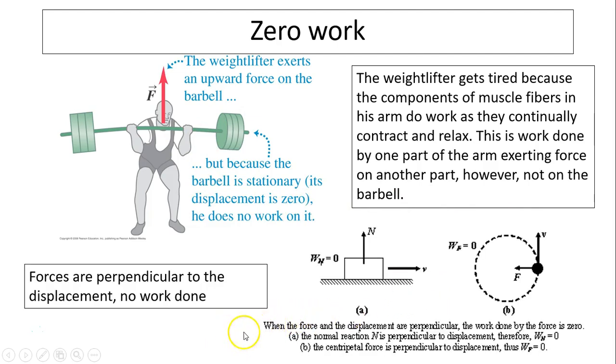Other examples of zero work include the normal force. As the box moves to the right, the normal force and gravity both do zero work. Another example is if you have a string and you twirl it around, the tension does zero work because the tension is perpendicular to the displacement at every single moment. Forces perpendicular to displacement do no work. Centripetal force never does any work.